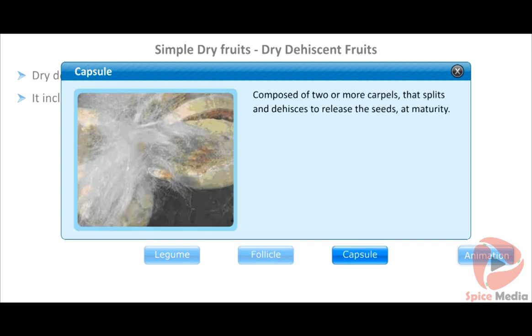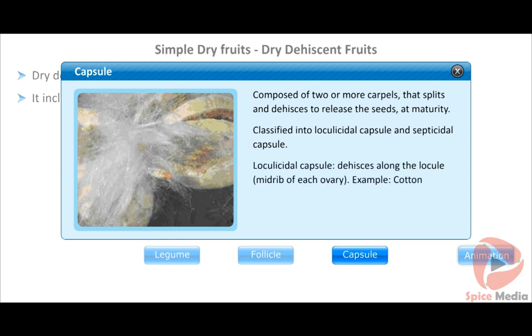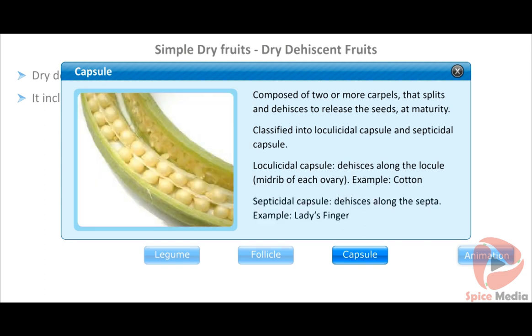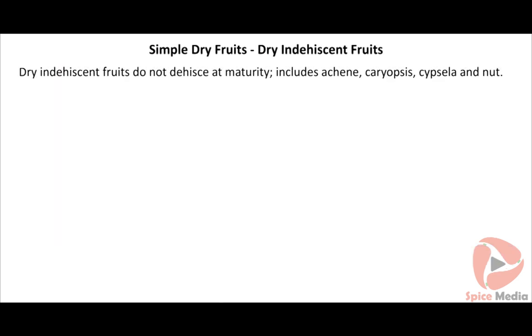The capsule is composed of two or more carpels that split and dehisce to release seeds at maturity. It is classified into loculicidal capsule and septicidal capsule. The loculicidal capsule dehisces along the locule — that is, the midrib of each ovary. Example: cotton. The septicidal capsule dehisces along the septa. Example: lady's finger.